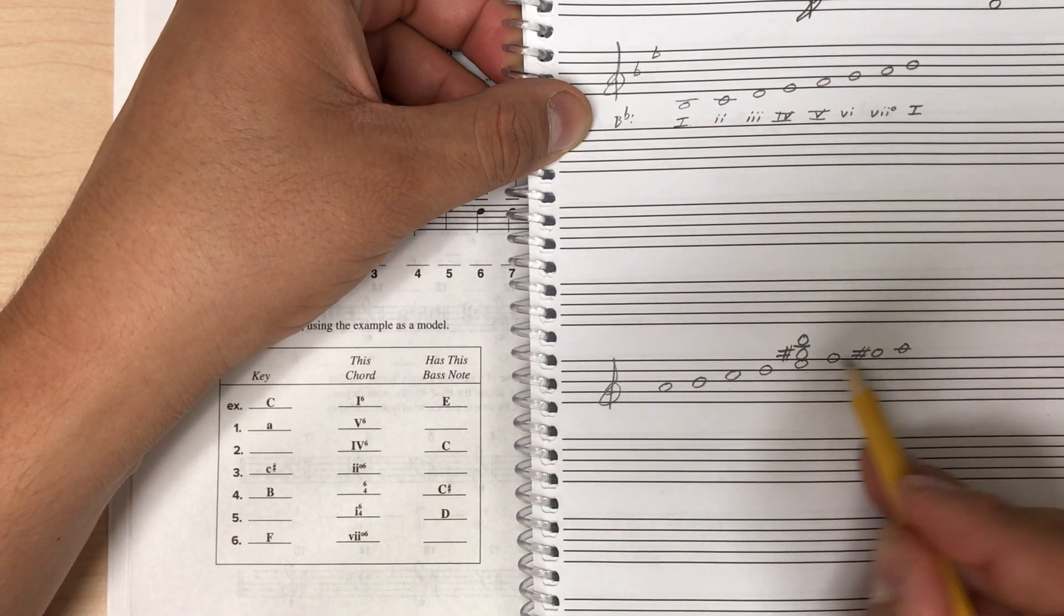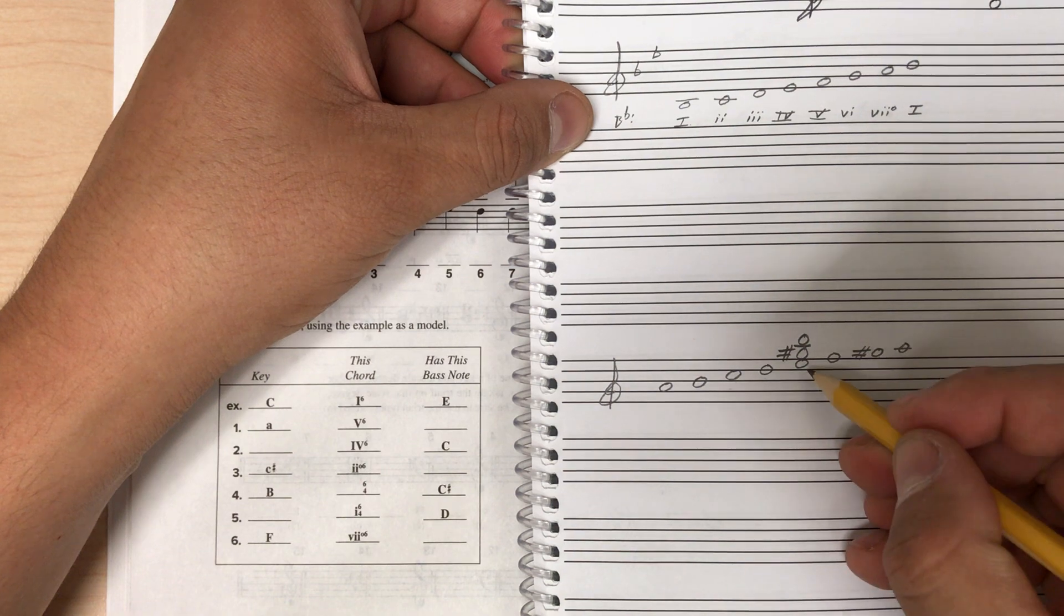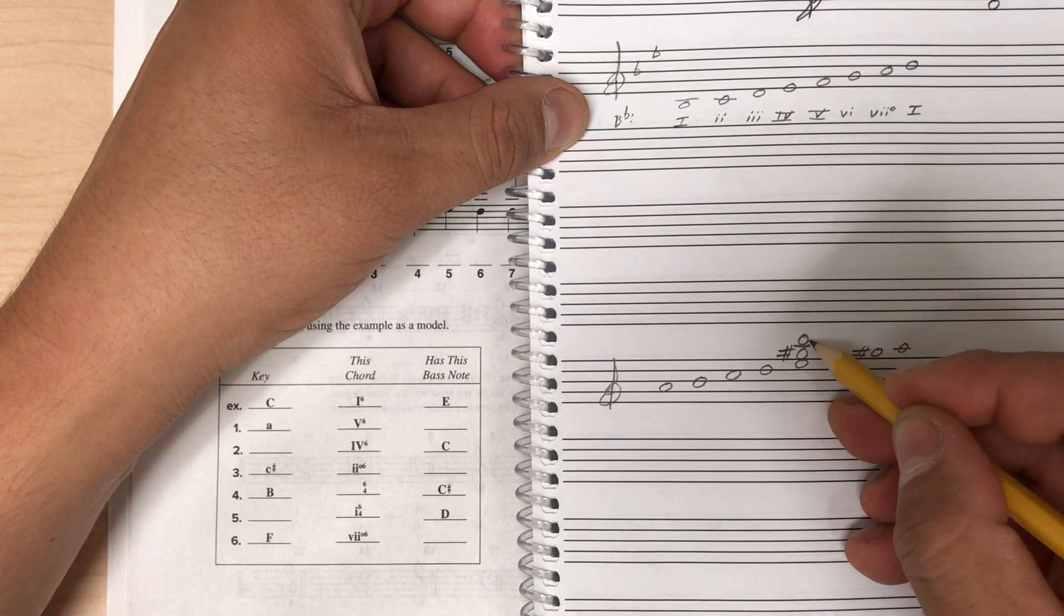So I need to use harmonic minor to spell this chord. So I'm going to use the G sharp instead of the G natural. So I have this chord of E, G sharp, B.